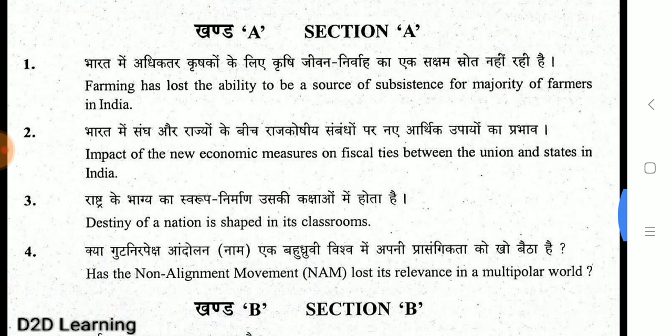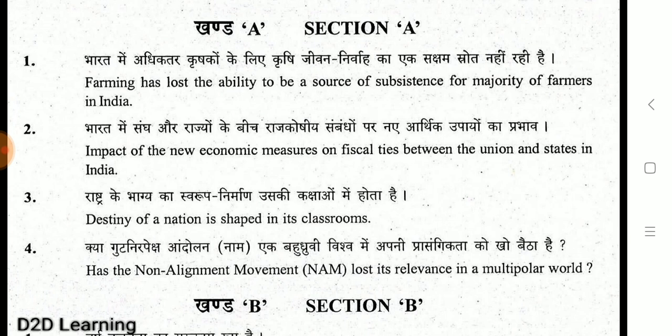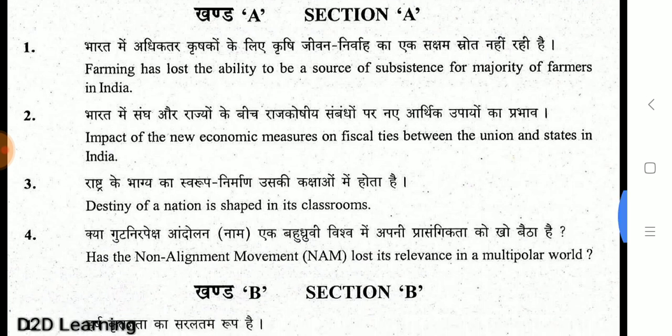Now let me go to the questions in Section A. First: 'Farming has lost the ability to be a source of subsistence for the majority of farmers in India.' So farming is the topic — the majority of farmers have lost that subsistence. This is a statement, and you will write about farming, farmers, and related issues.